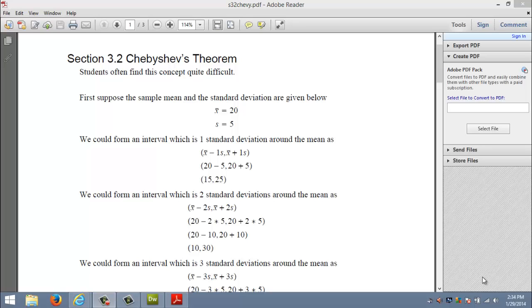In this video we're going to be talking about a hard topic, or at least students find it quite difficult, at the end of section 3.2 which is called Chebyshev's theorem. What this theorem gives you is a worst case scenario as to what proportion of the data has to live in a particular range.